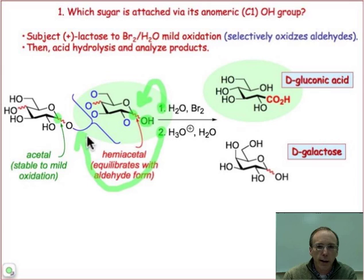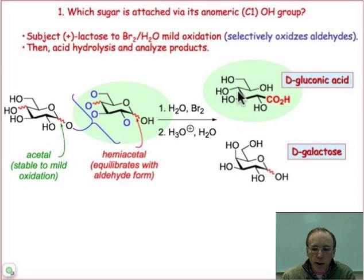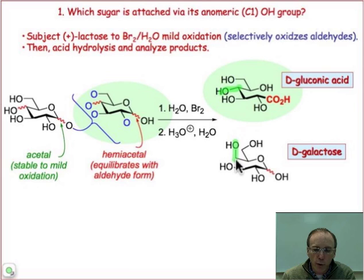The hydrolysis step is where we break apart that acetal or glycosidic linkage and split that disaccharide into its two monosaccharides, one of which will be oxidized to the aldonic acid. And we can see, by looking at the result, that it was glucose that was oxidized at its hemiacetal position.